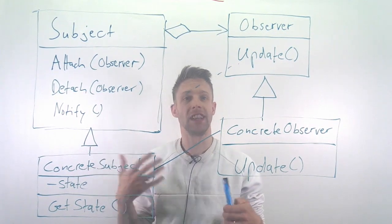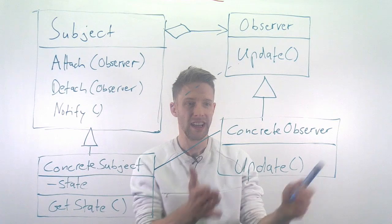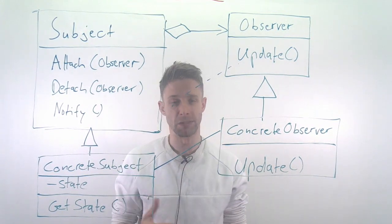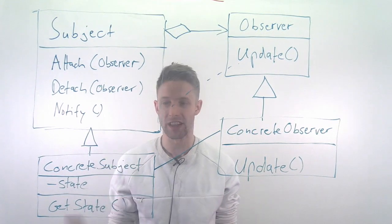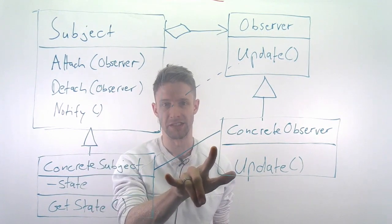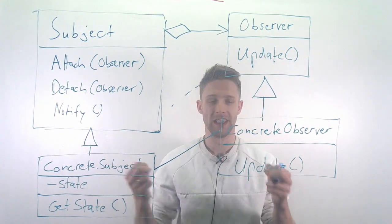If you implement some kind of data structure, then this information is here, how the data structure looks like, and the observer needs to know that. For example, if you want to display a bar chart or a pie chart of that data, you need to know how the data looks like. That's why we have this line in between here - the concrete classes know each other.